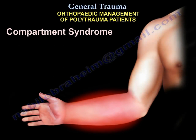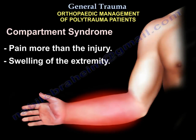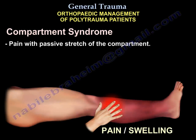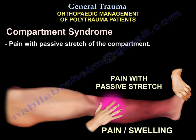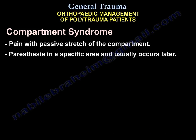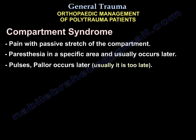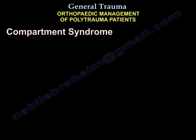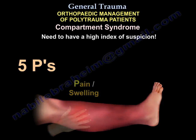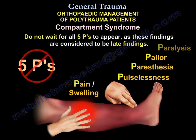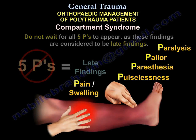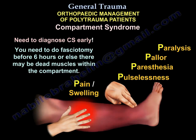Compartment syndrome must be dealt with emergently. Signs include pain greater than expected from the injury, swelling of the extremity, and pain with passive stretch of the compartment. Paresthesia in a specific area occurs later, and the pulse and pallor changes occur even later — usually too late. Maintain a high index of suspicion and don't wait for the five P's. Diagnose compartment syndrome early and perform fasciotomy before six hours, otherwise muscles may die.